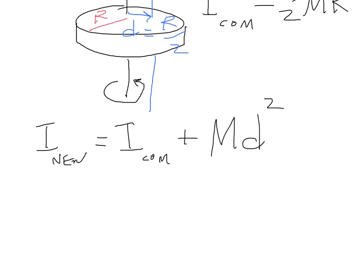So I can put in my one half M R squared as my original one through the center of mass. And then I'm going to put in an M, and how much did I shift it? I shifted it by R over 2, and that gets squared.